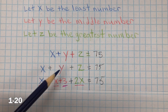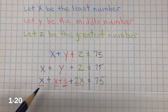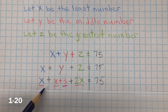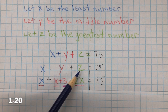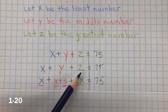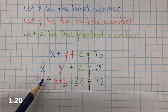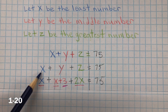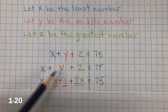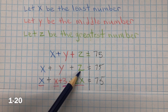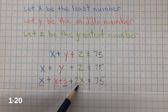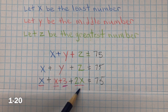Since X plus Y plus Z equals 75, we know that the greatest number, which is Z, is twice as large as the least number. The greatest number is Z and the least number is X, so Z equals 2X.